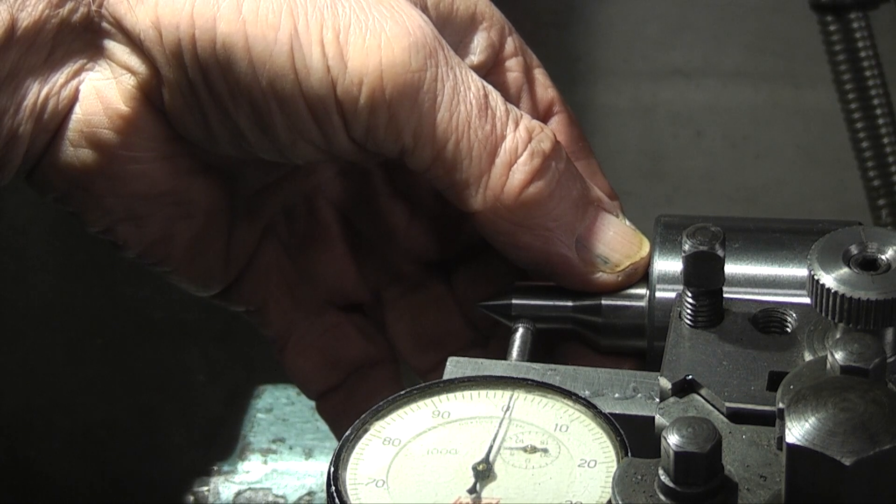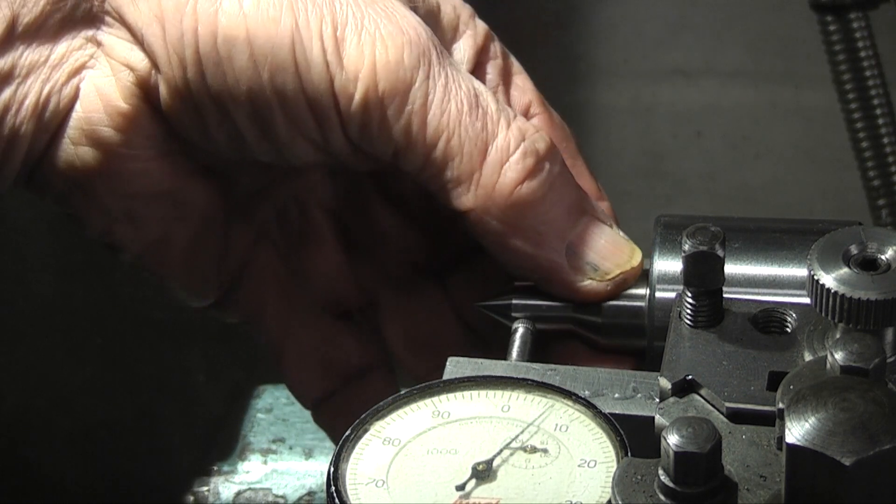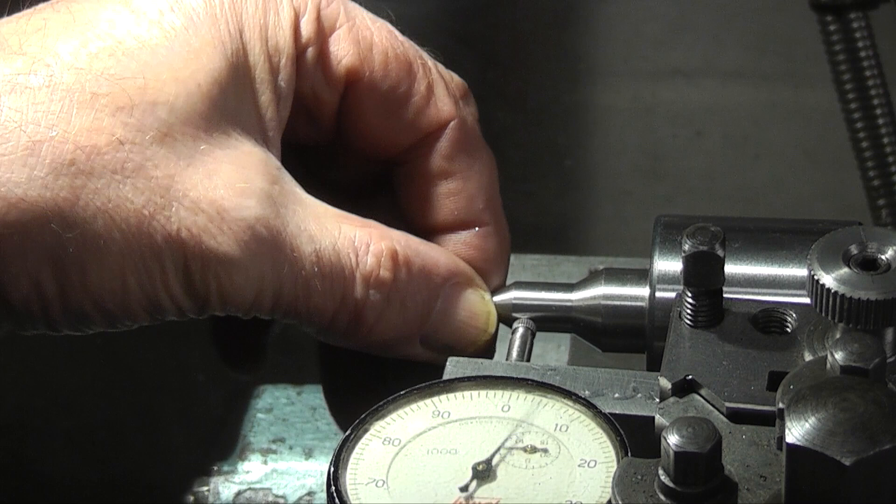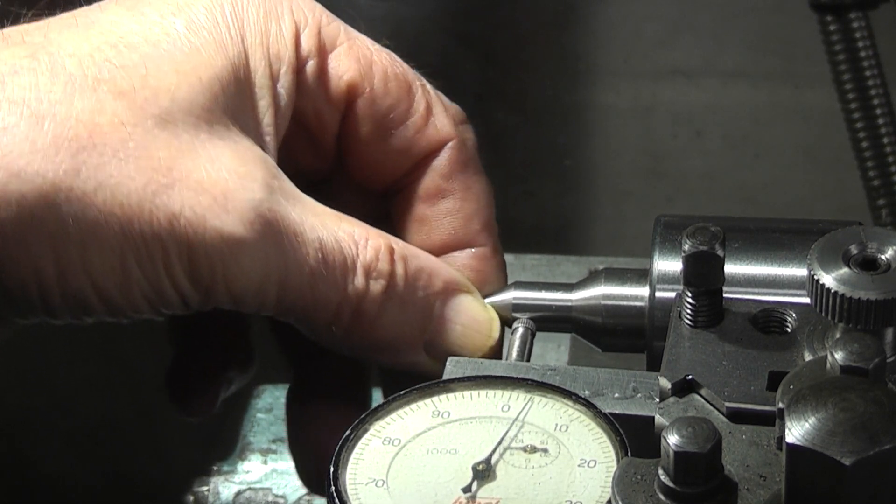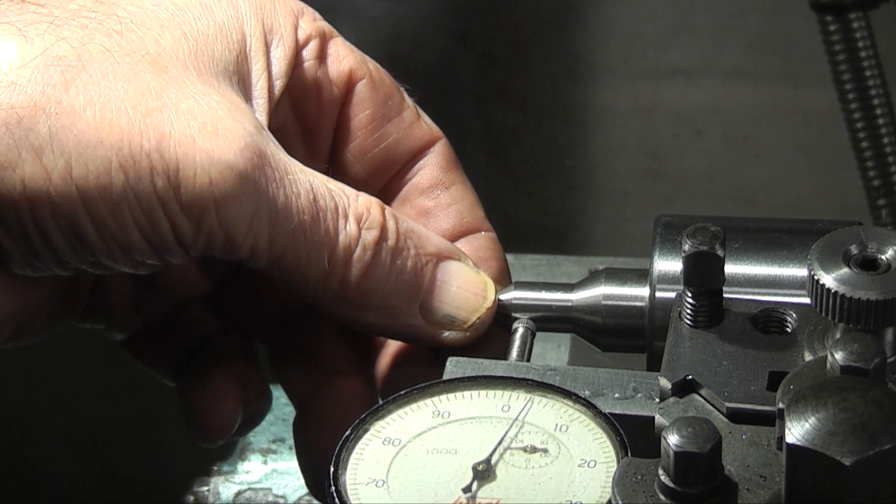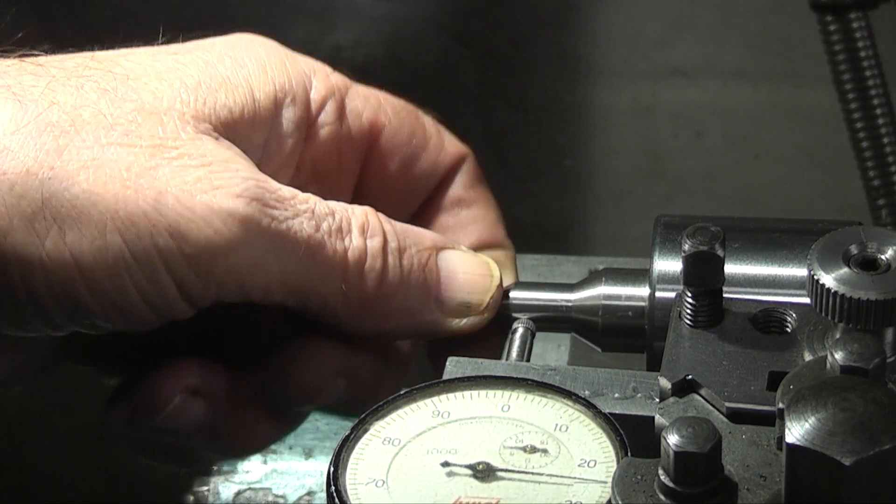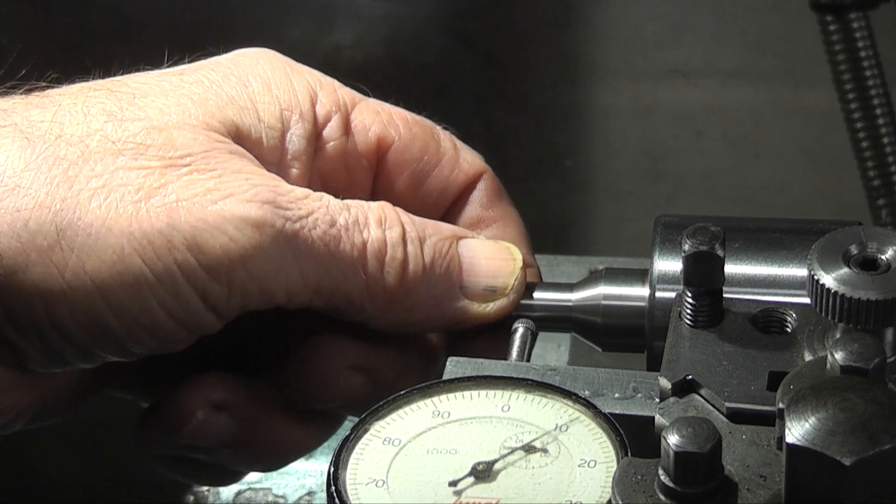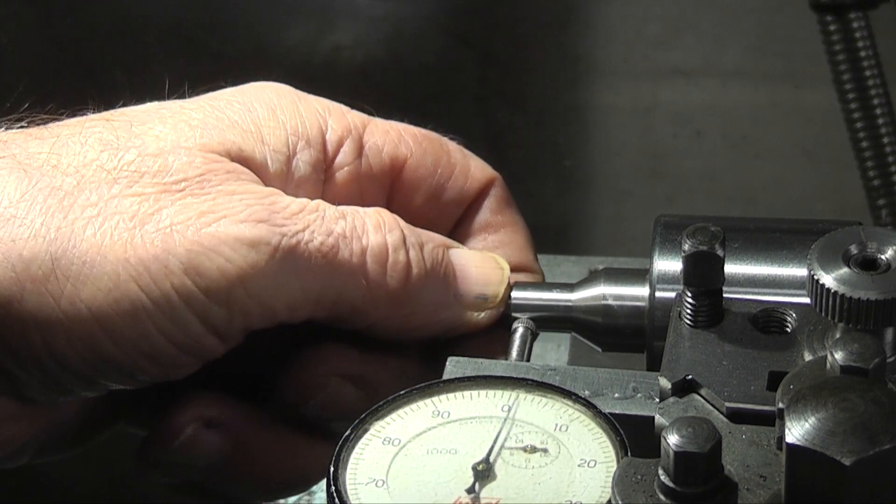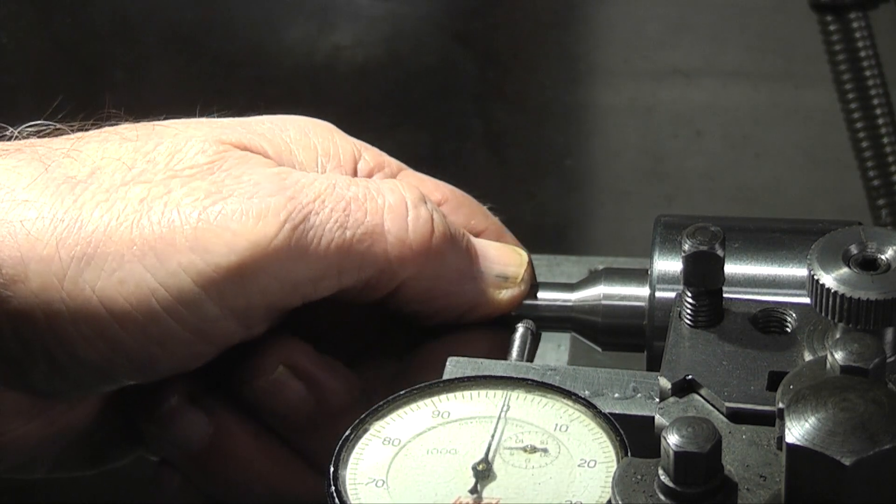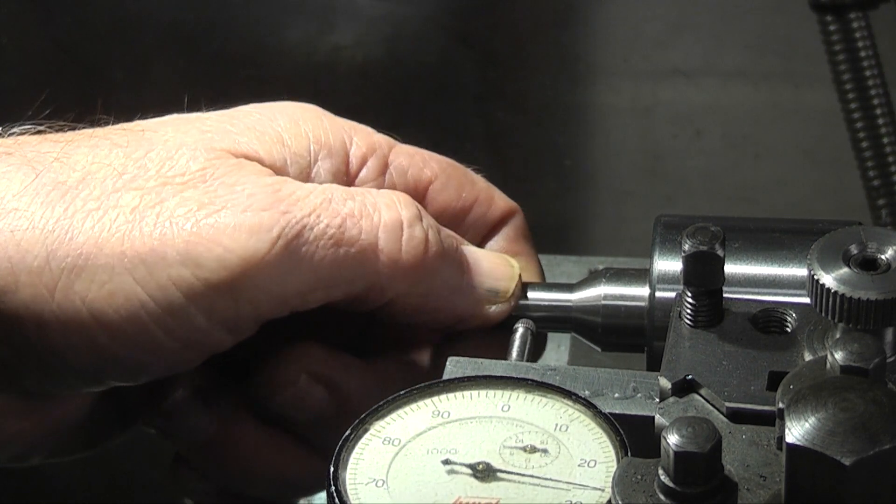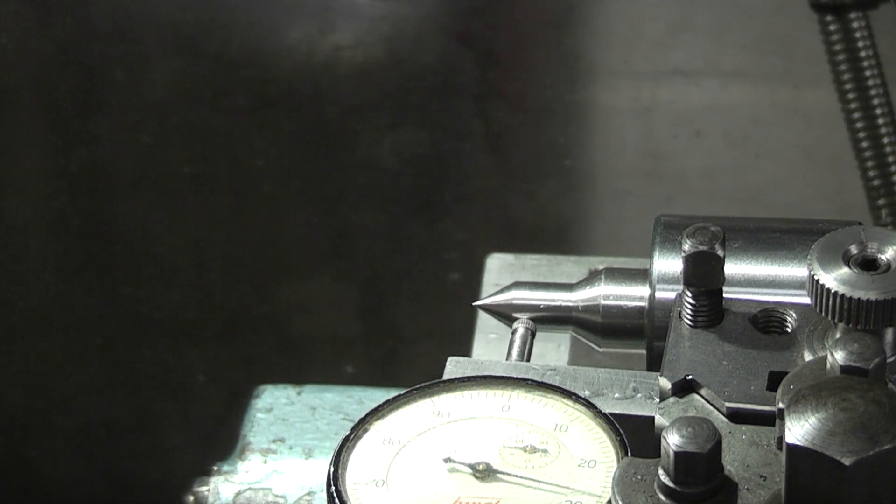That's three thou there. Each division is a tenth of a thou. That's just over two and a half thou rotating on the outside.